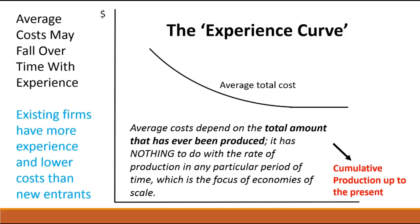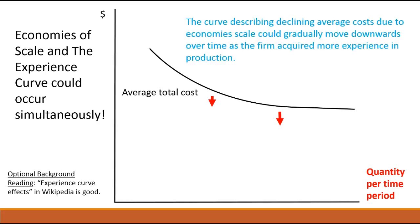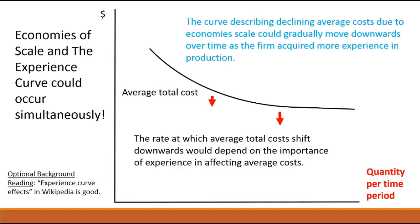Just to wind this up, I would like to note that the story of economies of scale and the story of the experience curve can both happen at the same time. So we could look at economies of scale where the variable is the quantity per period of time, and it could be the case that if experience is important in this particular activity, year after year, as more experience is acquired, the average costs could gradually decrease as well. So there's no reason why we couldn't put those two stories together, depending on the importance of experience in affecting average costs.